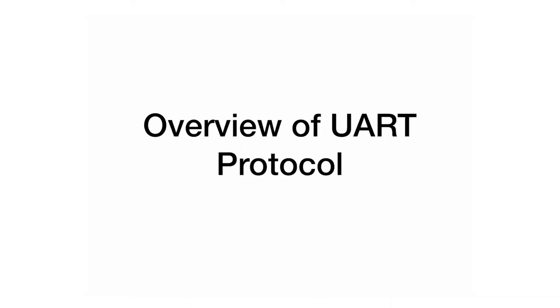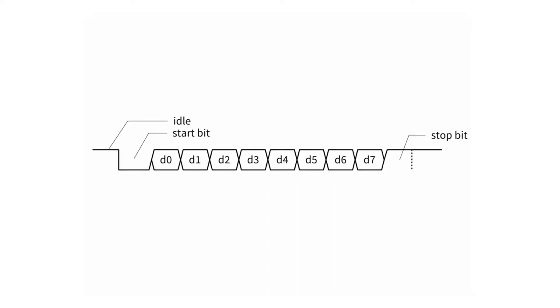UART is a form of serial communication protocol that sends bits of data one at a time over a single wire. But it is a protocol, so it follows a very specific pattern. Let's see how a transmitter actually sends a byte of data to a receiver.